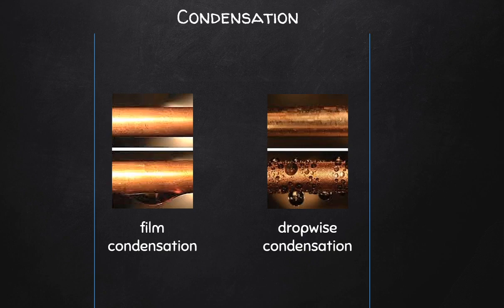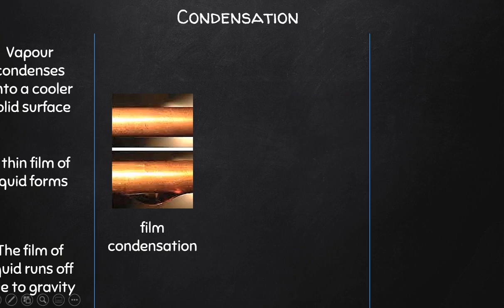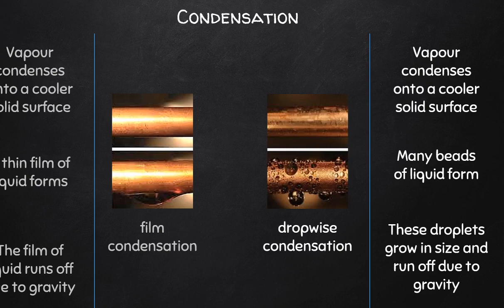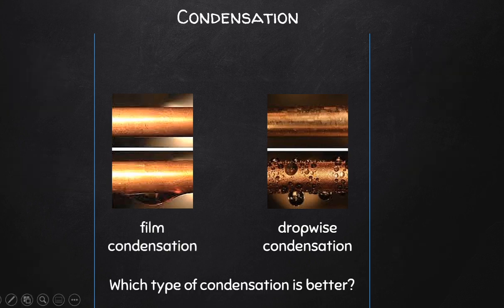Now let's turn attention to condensation. Condensation occurs as two distinct types. The first is film condensation, where a film of liquid covers the solid interface completely and the liquid leaves by gravity. The second occurs with the development of individual liquid droplets, which also leave by gravity but without the development of a liquid film. The question is: which form of condensation is better — film condensation or dropwise condensation?